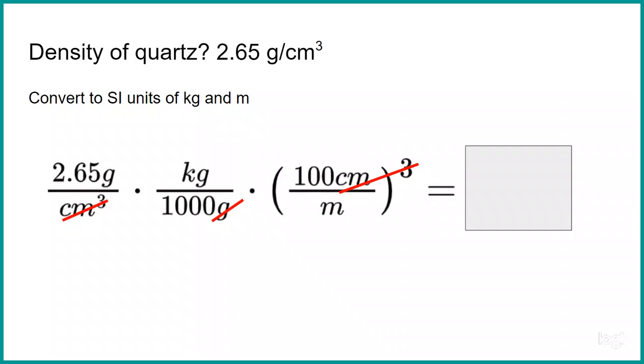These are easy numbers to remember. But these are now what we call SI units, the standard international units that scientists use. The SI units of mass are kilograms, not grams. And the SI units of length are meters. So let's convert 2.65 grams per cubic centimeter. We're going to convert that into kilograms per cubic meter.